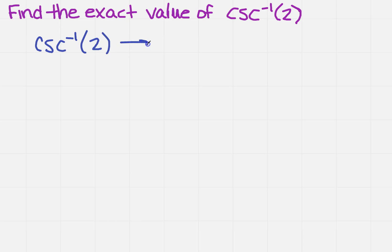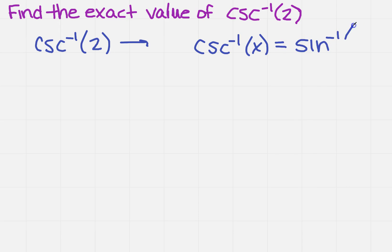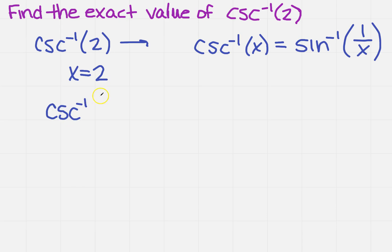We know that the inverse cosecant of x is the inverse sine of 1 over x — we know that's a true statement. So, given that x equals 2, I can say that the inverse cosecant of 2 is the inverse sine of 1 half.